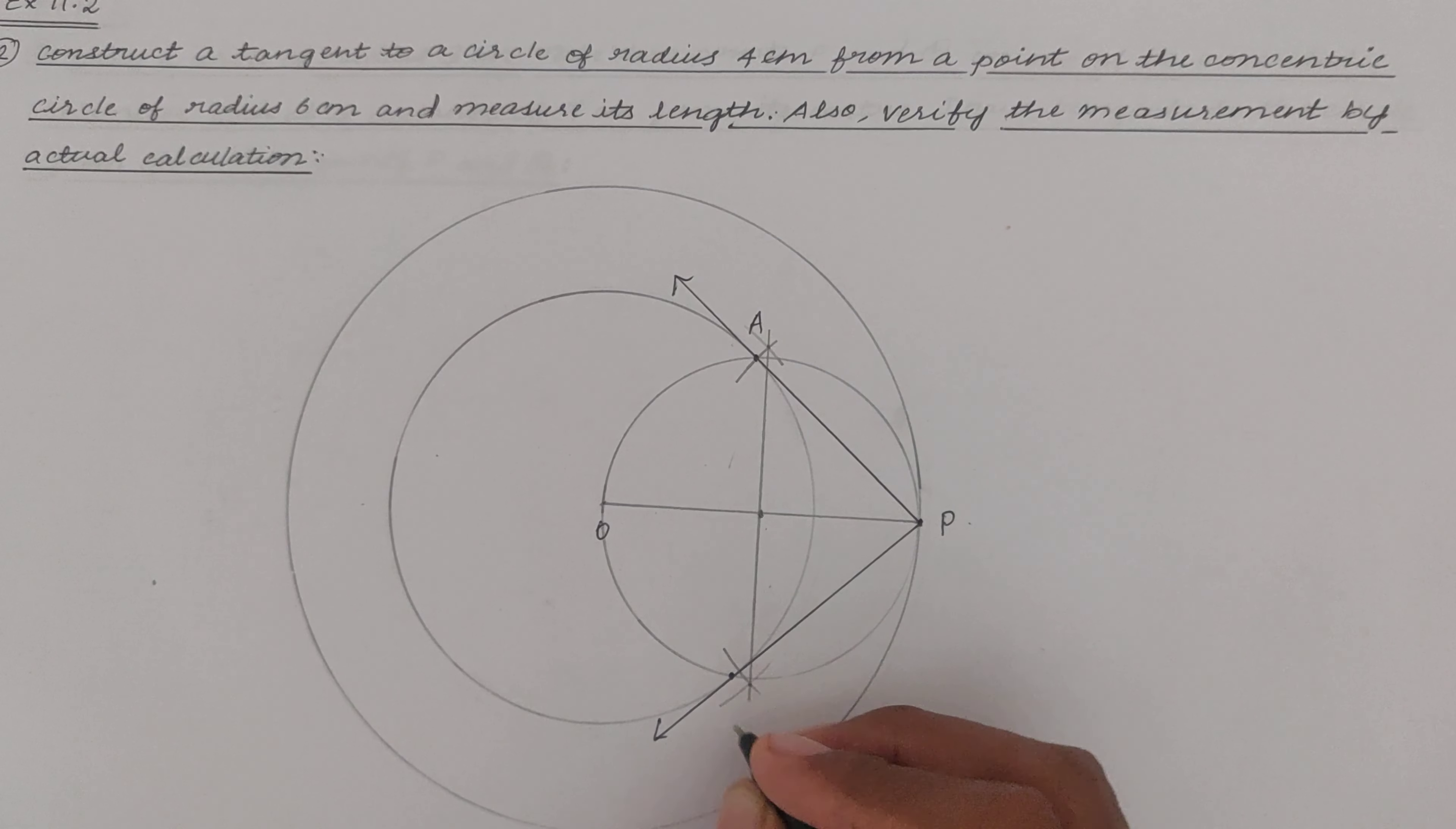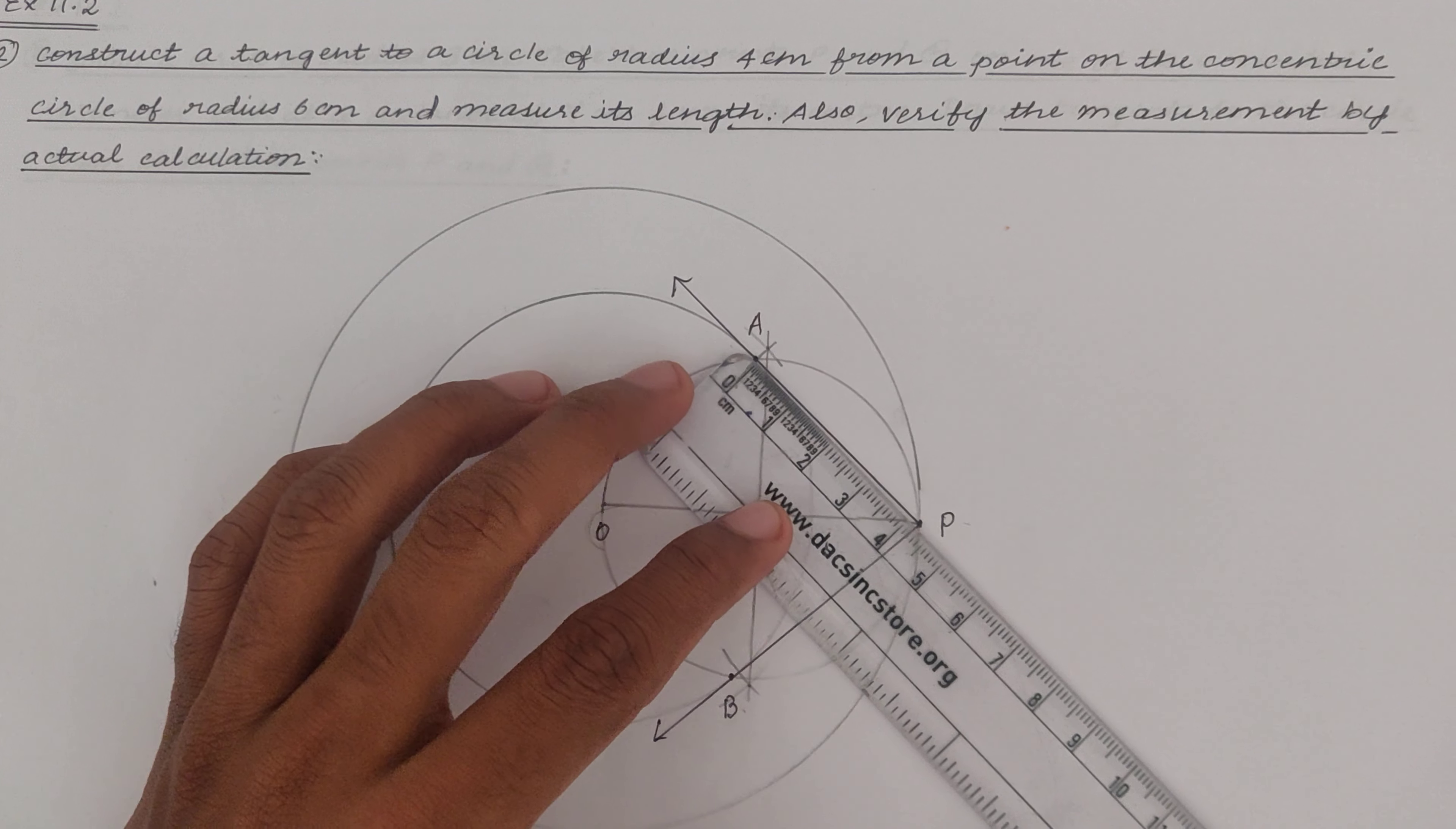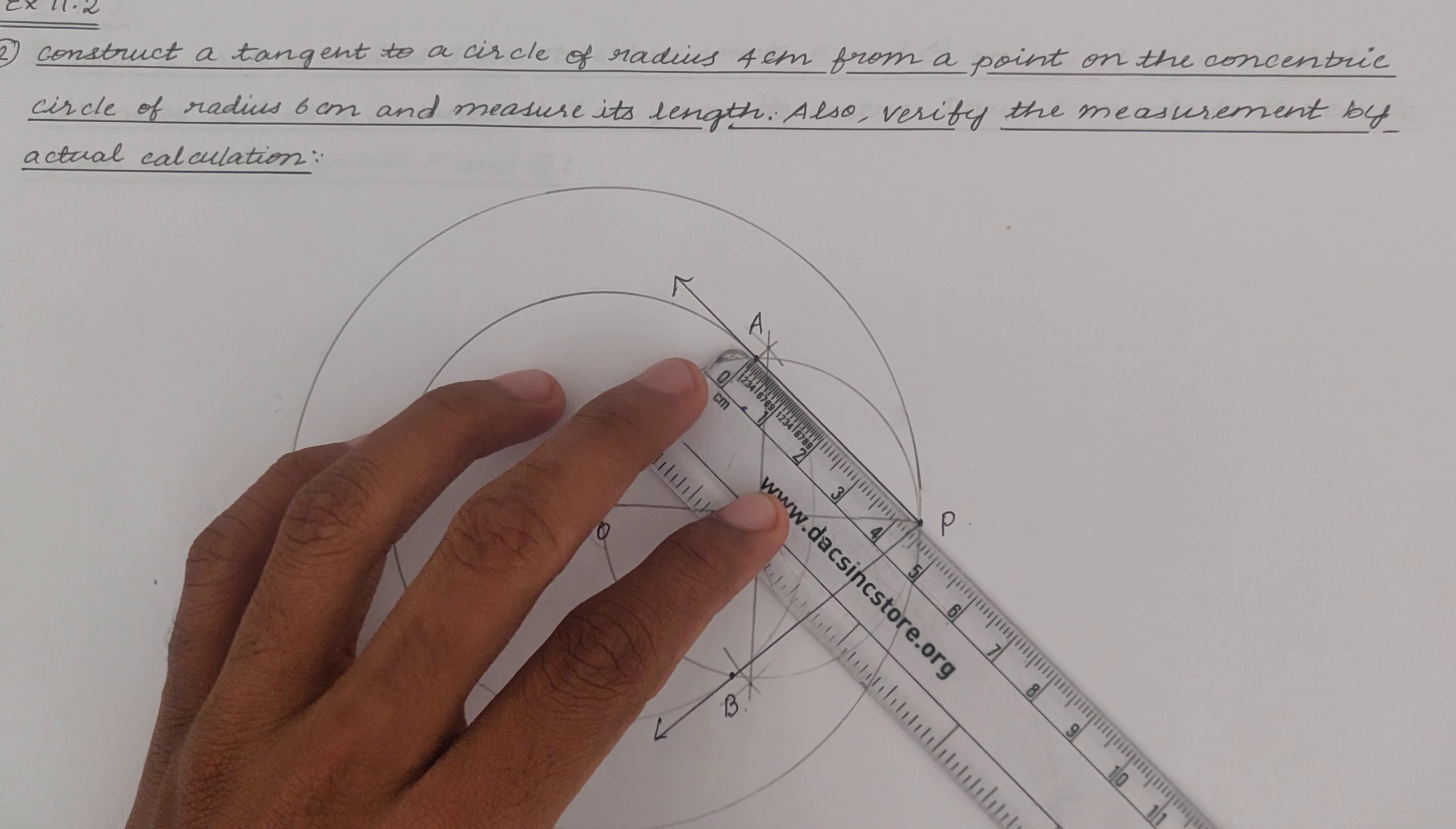Let's mark the points of intersection as A and B and let us measure the length of the tangents. So here we are getting the length of the tangent as 4.5.